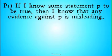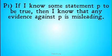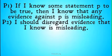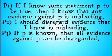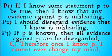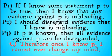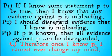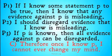We're going to look back at the paradox of dogmatism mentioned at the beginning of this series. If I know some statement P to be true, then I know that any evidence against P is misleading. I should disregard evidence I know is misleading. If P is known, then all evidence against P can be disregarded. Therefore, once I know P, I cannot ever change my mind. The non-Bayesian epistemologist claimed we can escape this by rejecting the hardiness of knowledge — that once you know something, you can change that knowledge. That will be more of a problem for the Bayesian.